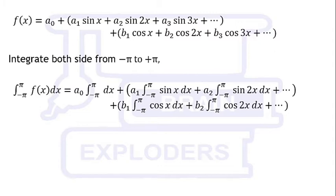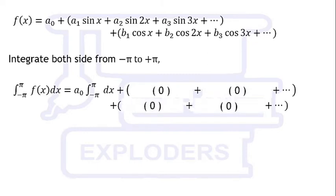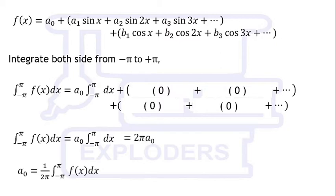Integrate both sides from -π to +π. Except the integration of a₀, all the other terms become 0. So the value of a₀ can be obtained by integration of f(x)dx over 2π from -π to +π.